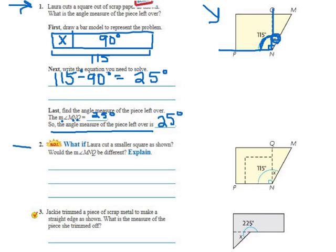Number two. What if Laura cut a smaller square as shown? Would the measure of angle MNQ be different? So, they're saying, what if she just drew a square right here and cut all this extra stuff off? Would X be different?